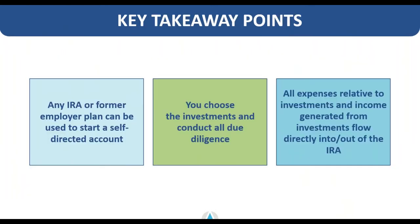There are a few key takeaway points for today's webinar. The first is that any IRA or former employer plan can be used to start a self-directed account. If you have a traditional or Roth IRA with a larger custodian, you can roll a portion or the entire IRA to a self-directed account. You can also roll over former employer plans like a 401k, 403b, 457, or a thrift savings plan. If you've left employment and had an employer-sponsored retirement plan, that money is a great source of funds to move into a self-directed account.